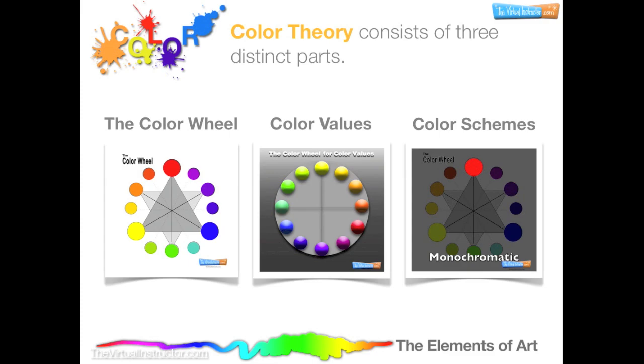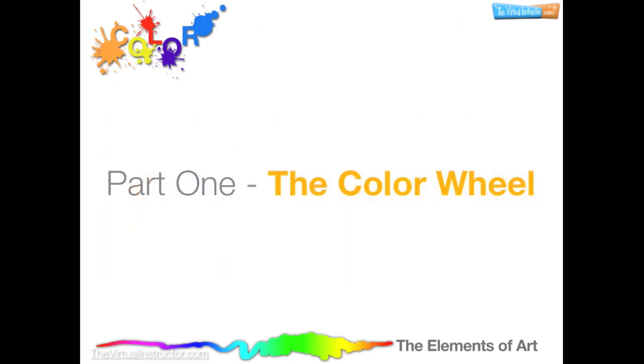Color theory consists of three distinct parts: the color wheel, color values, and color schemes. Part 1: The Color Wheel.